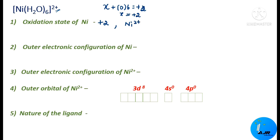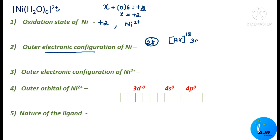Now we are going to write the outer electronic configuration of nickel. The atomic number of nickel is 28. Before writing the electronic configuration, you should know the nearest inert gas. The nearest inert gas of nickel is argon, with atomic number 18. The remaining 10 electrons are accommodated in the d orbital: 3d⁸ and 4s². So the outer electronic configuration of Ni is 3d⁸4s².